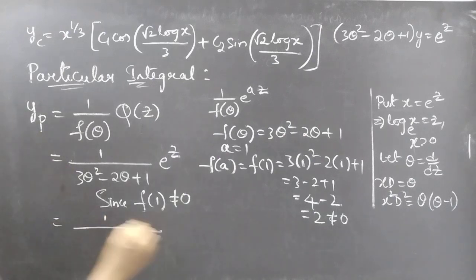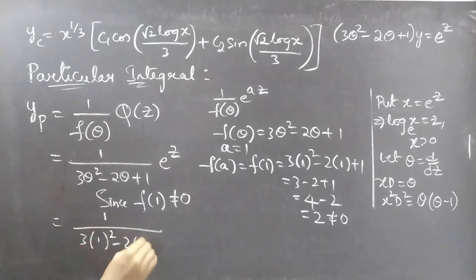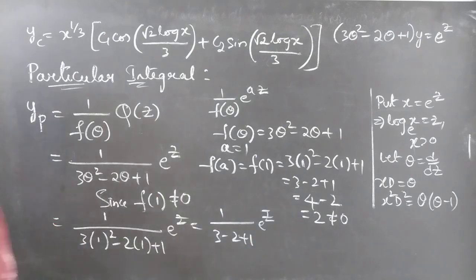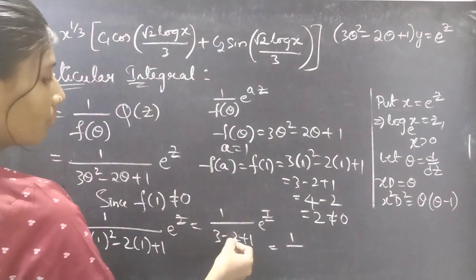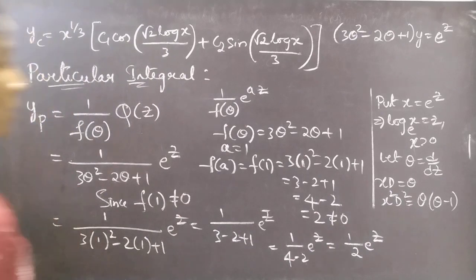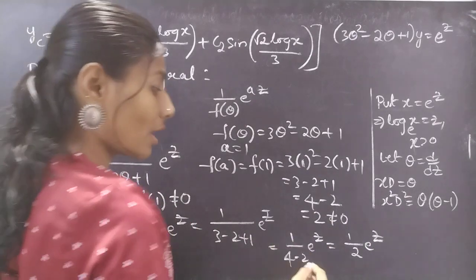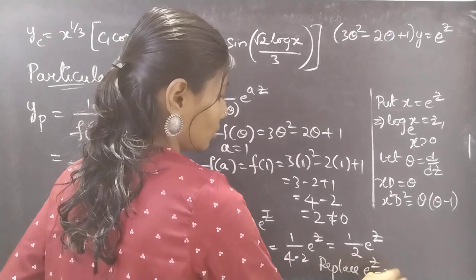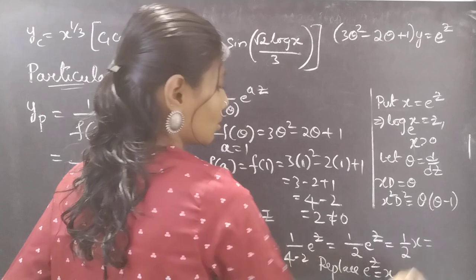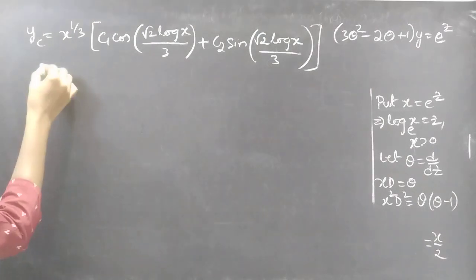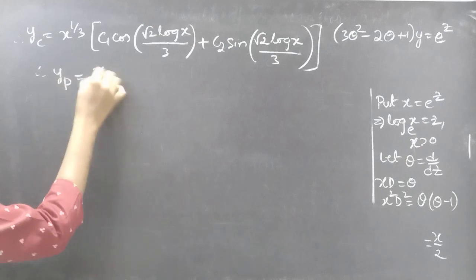Now replacing theta by 1 in the denominator: 3 times 1 squared minus 2 times 1 plus 1 into e power z gives 1 by 3 minus 2 plus 1 times e power z, which equals 1 by 2 times e power z. We now have yp in terms of z, but we need to write it in terms of x. We replace e power z by x, so yp equals to 1 by 2 times x, which we write as x by 2. So the required yp equals to x by 2.